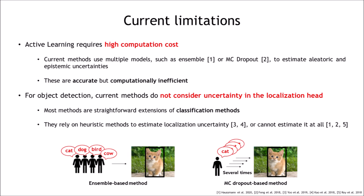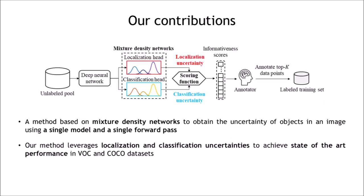To address these limitations, we propose a method based on mixture density networks to obtain the uncertainty of objects in an image using a single model and single forward path. In addition, we propose a scoring function that leverages both classification and localization uncertainties to achieve state-of-the-art performance.